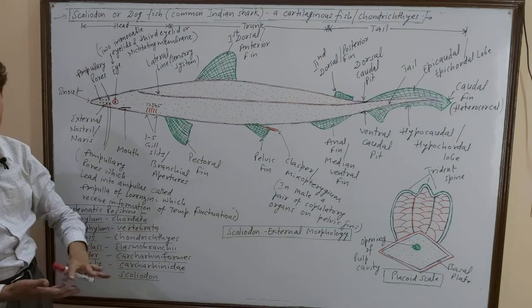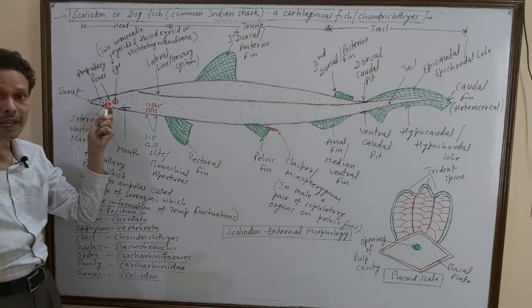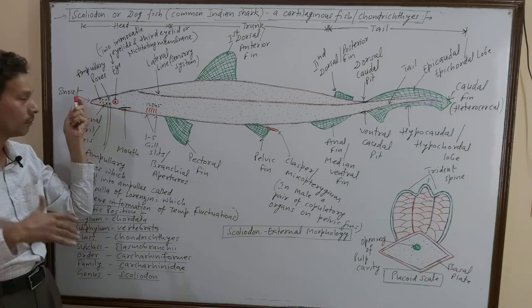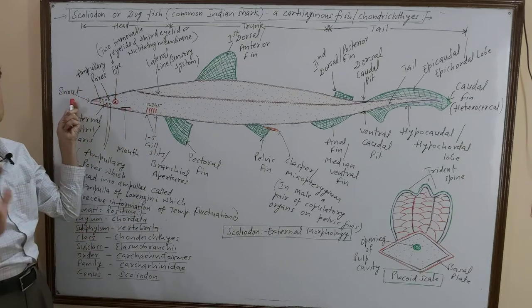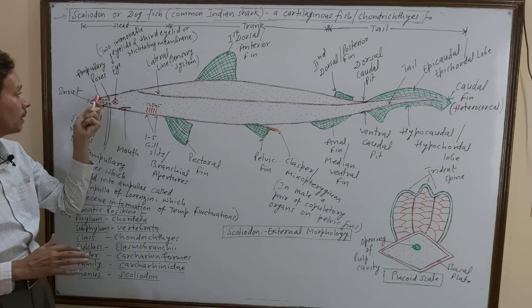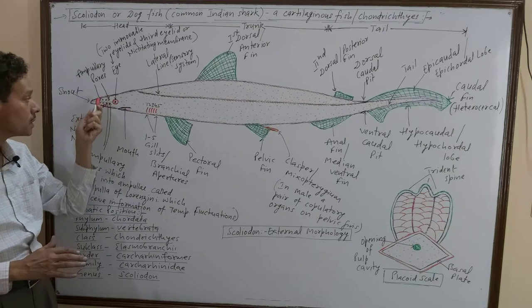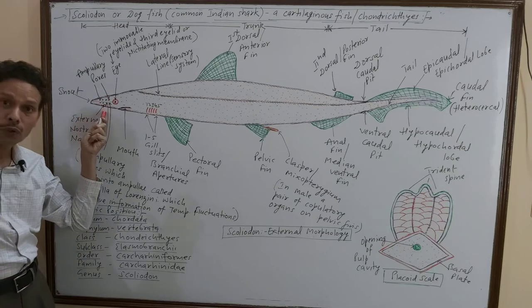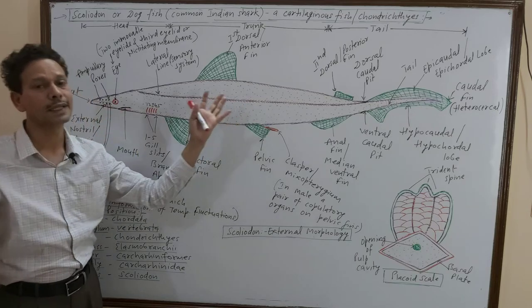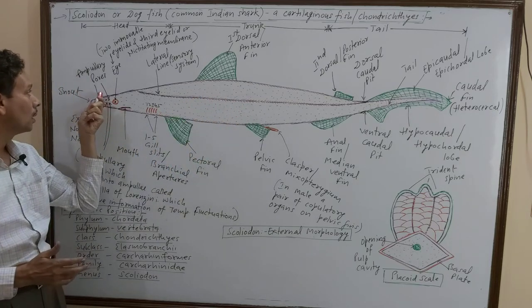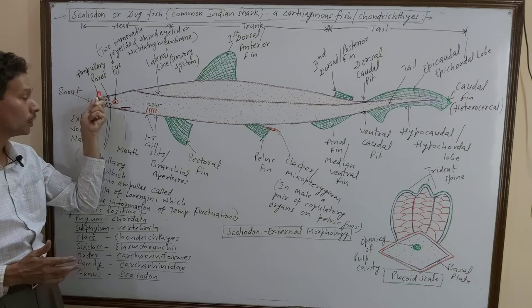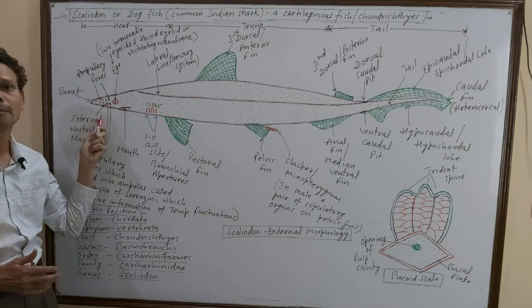Head region — the anterior part which is pointed. On the dorsal and ventral sides of the head region, some pores are there. These are ampullary pores, present on both the dorsal and ventral regions of the head.